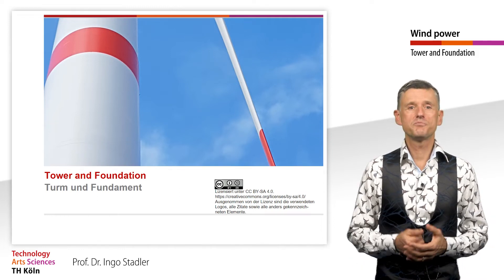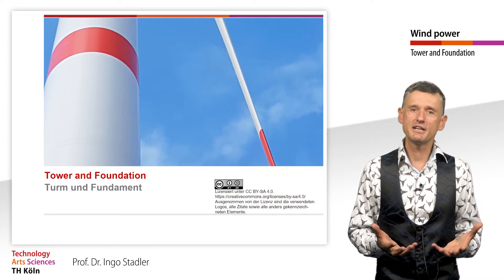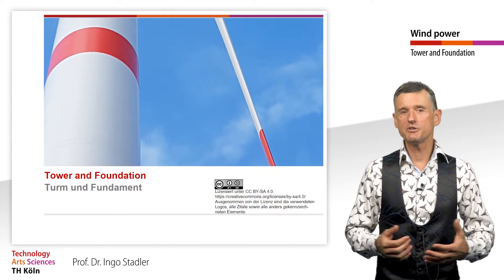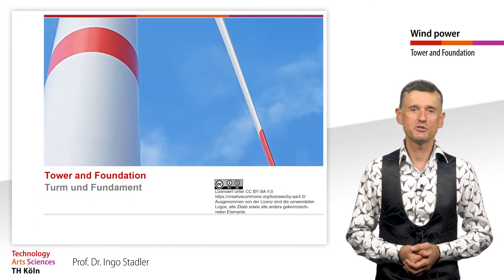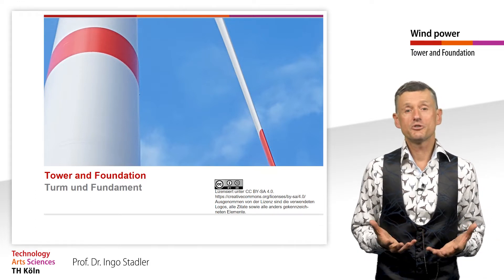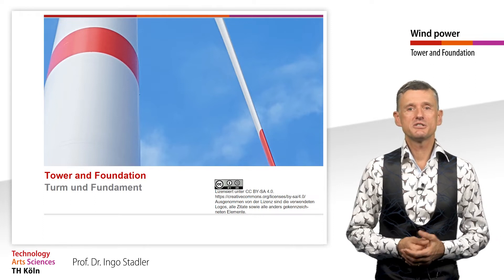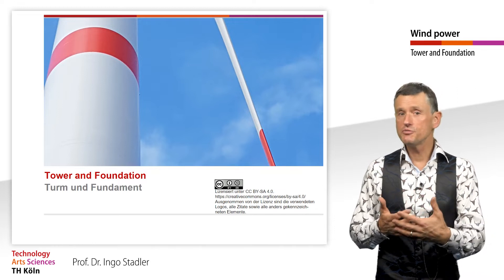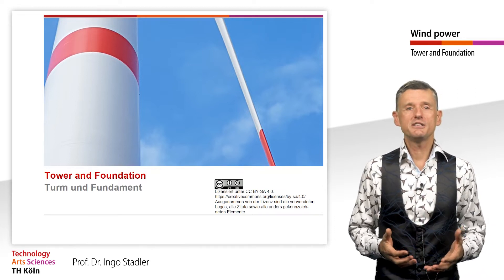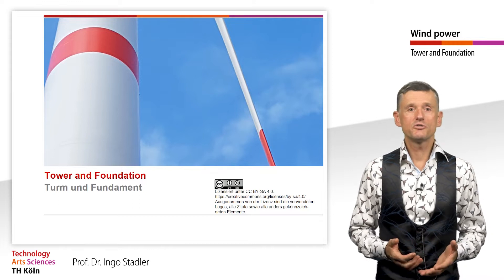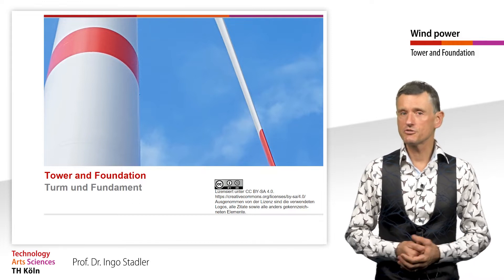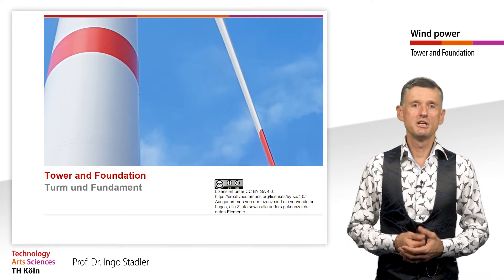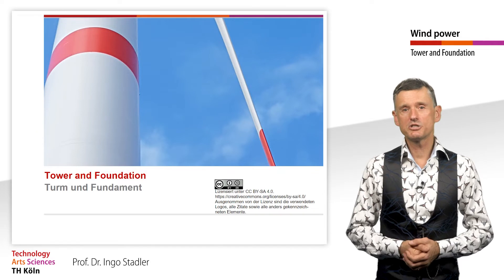The influence of the subjectively perceived landscape also plays a role. Lattice construction has again become an alternative to tubular steel construction for very tall towers, as the use of materials is significantly cheaper than for cantilever tubular steel towers. For tower heights greater than 100 meters, concrete in the form of hybrid construction is again more favored.